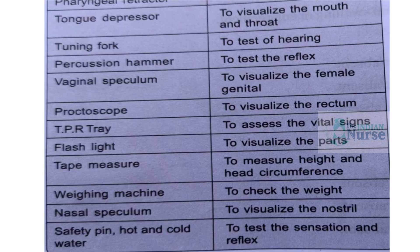Pharyngeal retractor — to visualize the pharynx. Tongue depressor — to visualize the mouth and throat. Tuning fork — to test hearing. Percussion hammer — to test reflexes. Vaginal speculum — to visualize the female genitalia. Proctoscope — to visualize the rectum. TPR tray (temperature, pulse, respiration) — to assess vital signs. Flashlight — to visualize body parts.